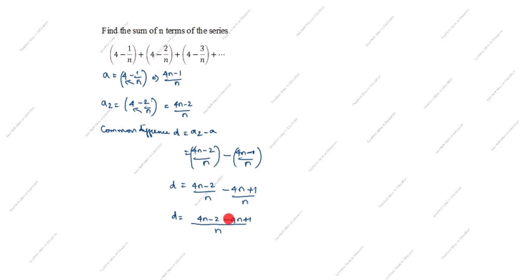The 4n terms cancel out, leaving -2 + 1 in the numerator. So d = -1/n.